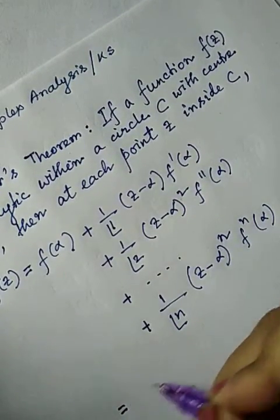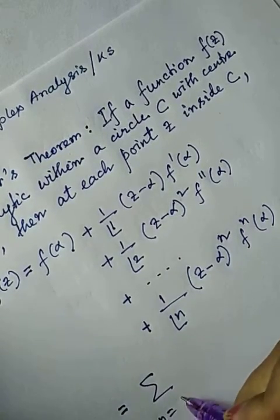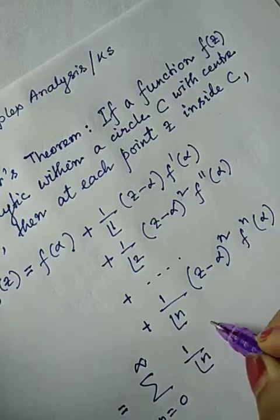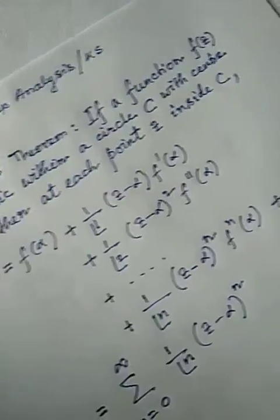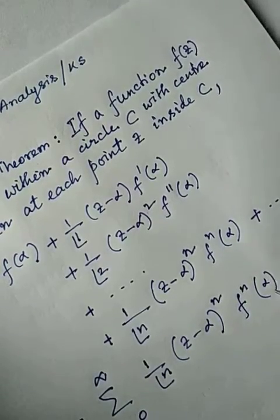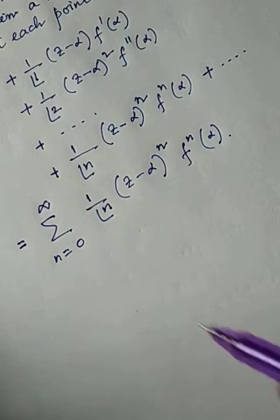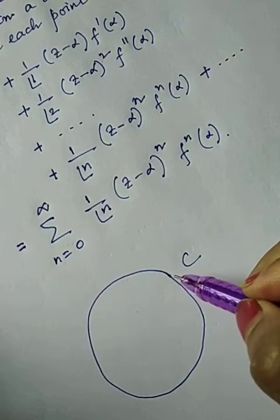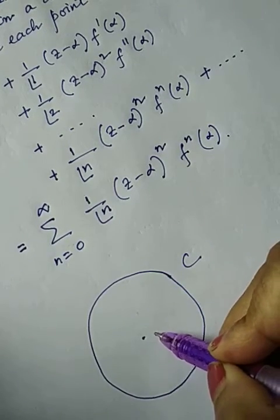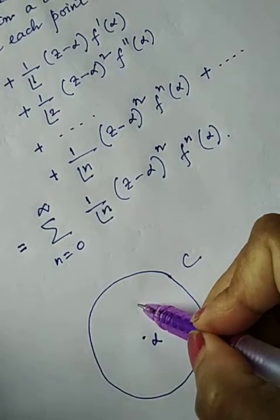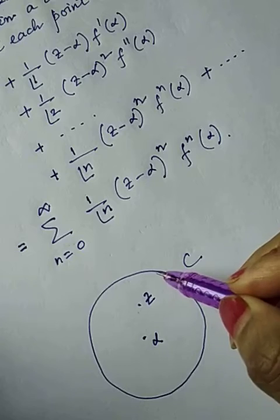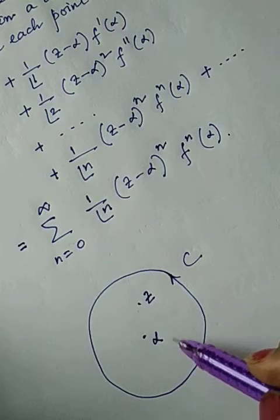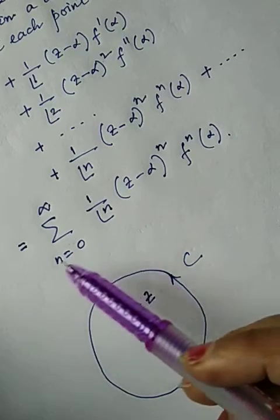This function is of the form: sum from n=0 to infinity of (1/n!) (Z − alpha)^n F^n(alpha). So let us take one circle C with center alpha, then there is a point Z inside the circle C. Inside the circle, the function F(Z) can be expanded in this form.